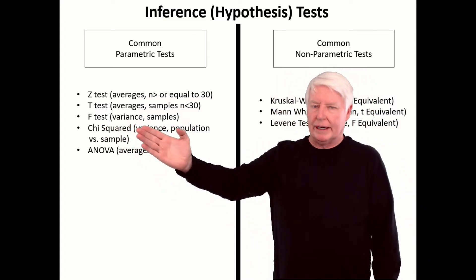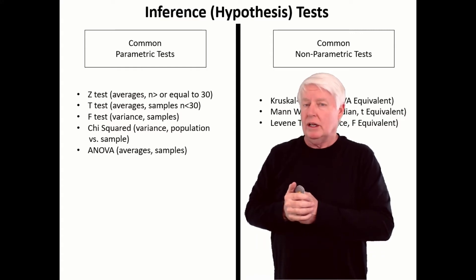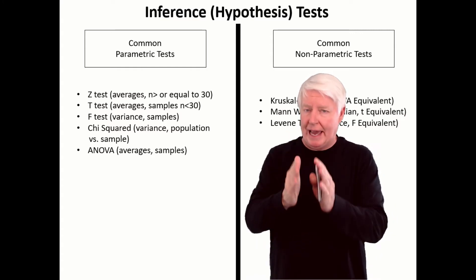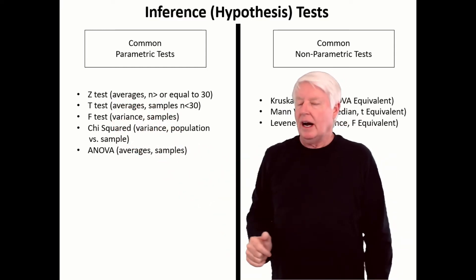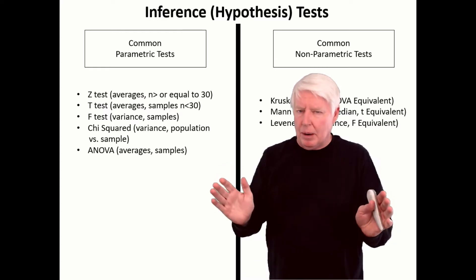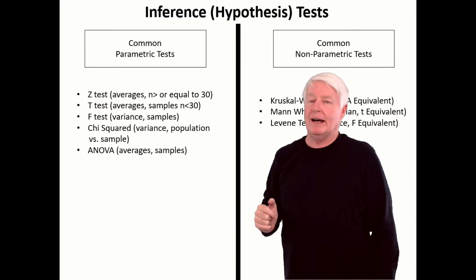F-test is for variance. Remember, there's only two numbers you need to describe the whole normal distribution: the average and the standard deviation. So whenever I run a z-test or t-test, I also follow it up with an F-test, so I know if any part of the distribution has changed. I think that would be good advice to do the same.